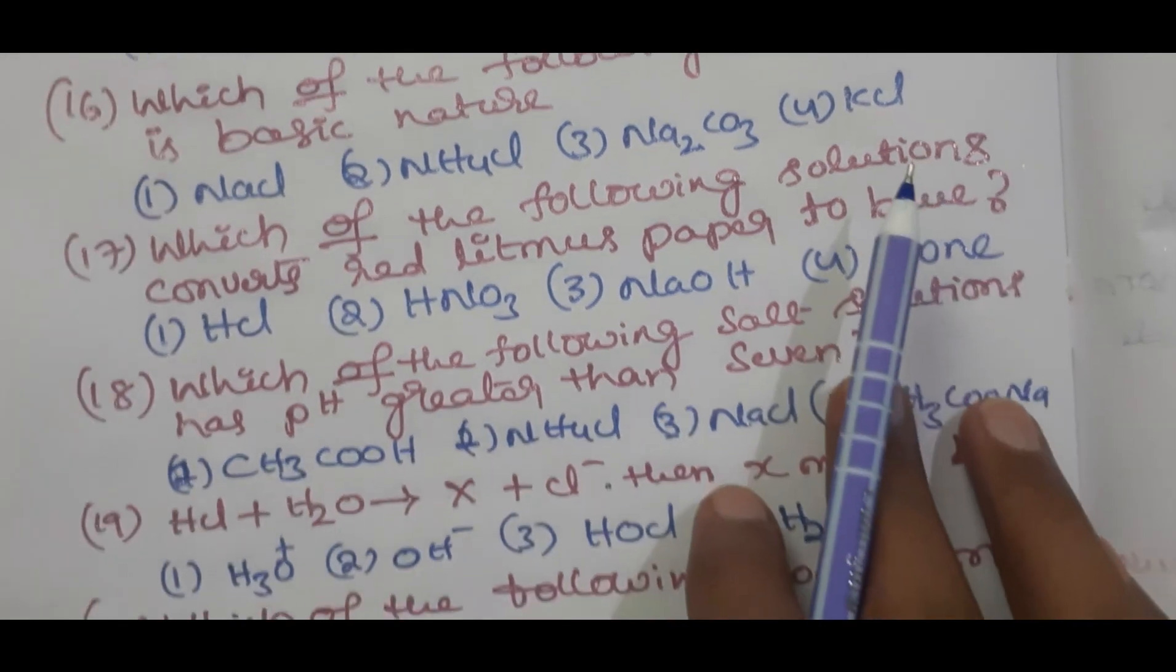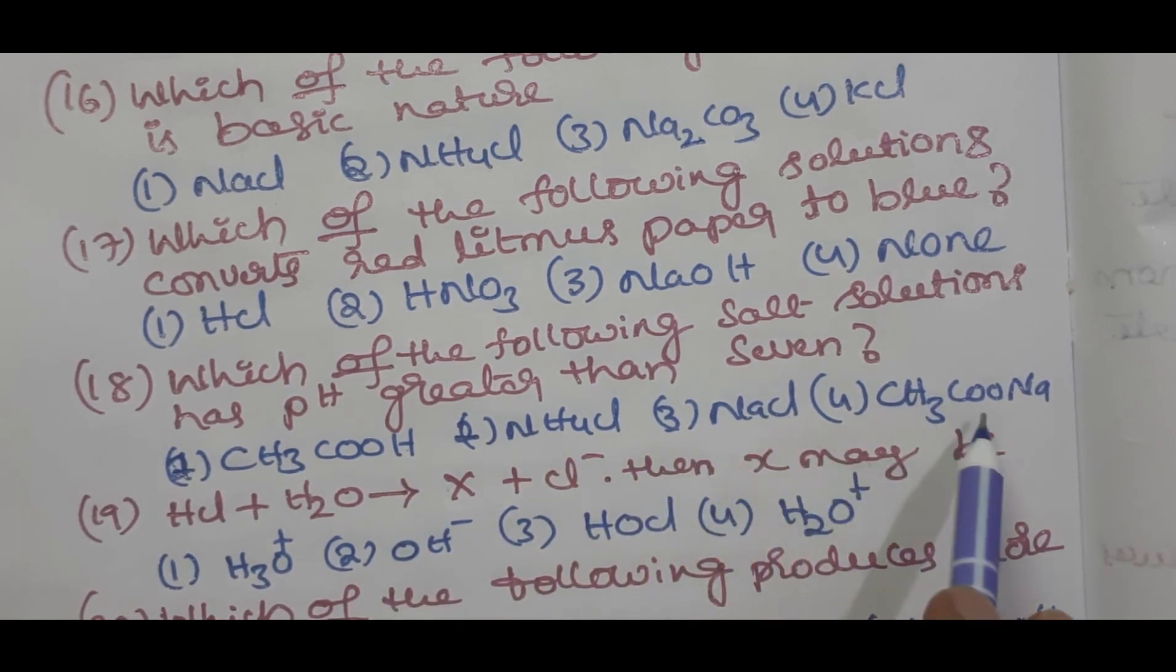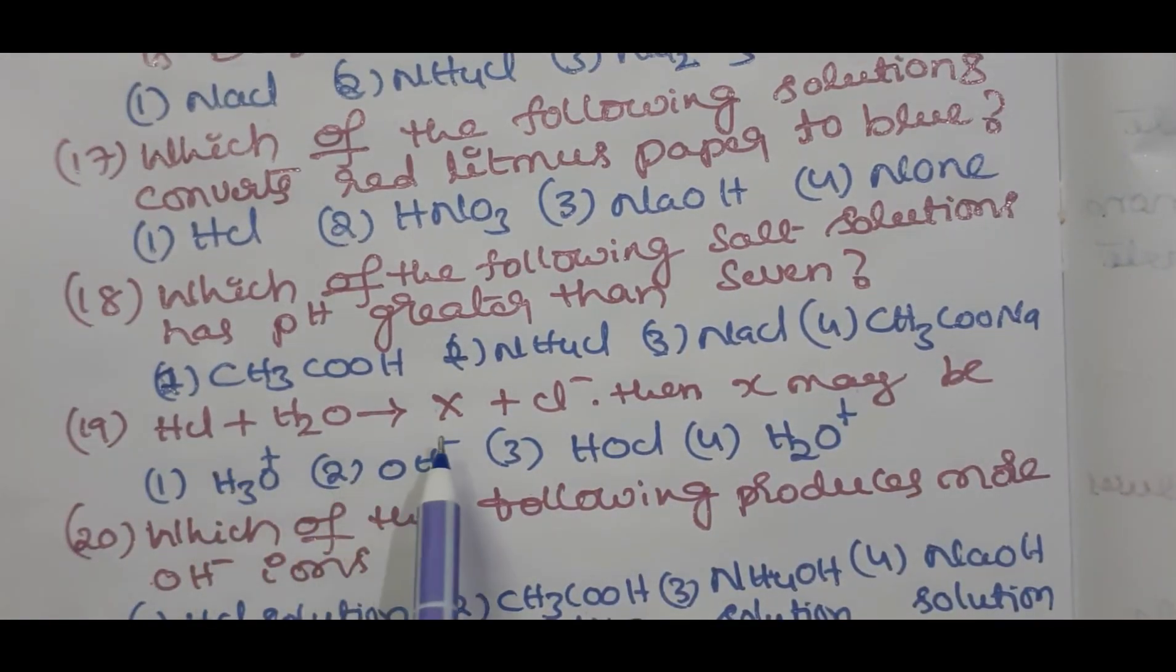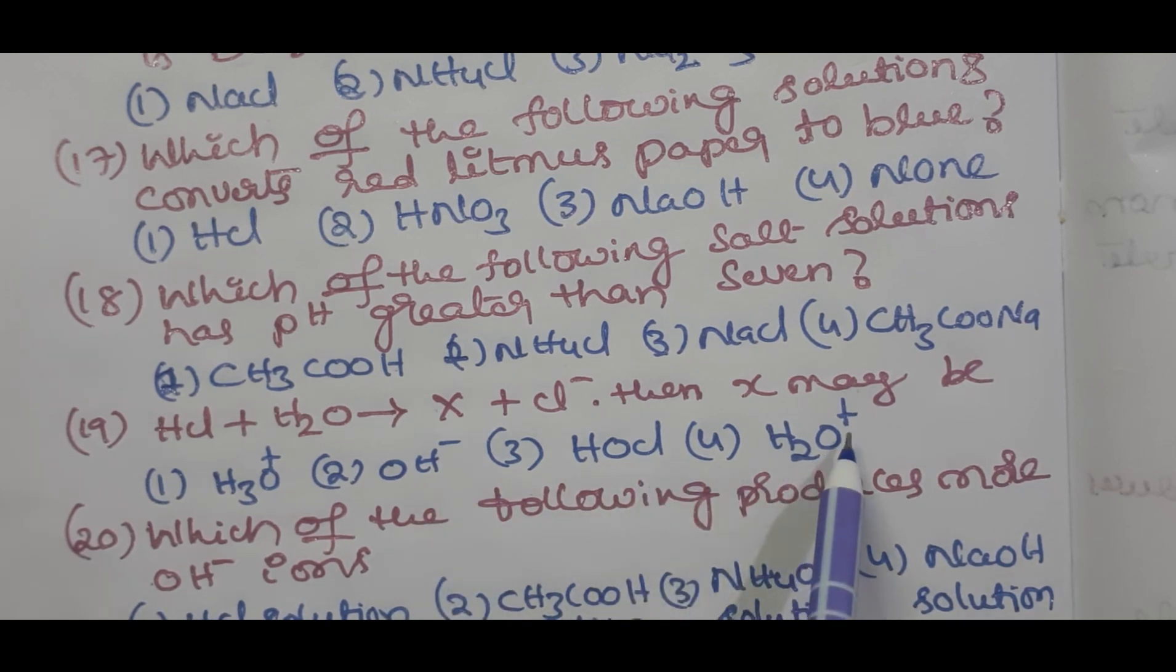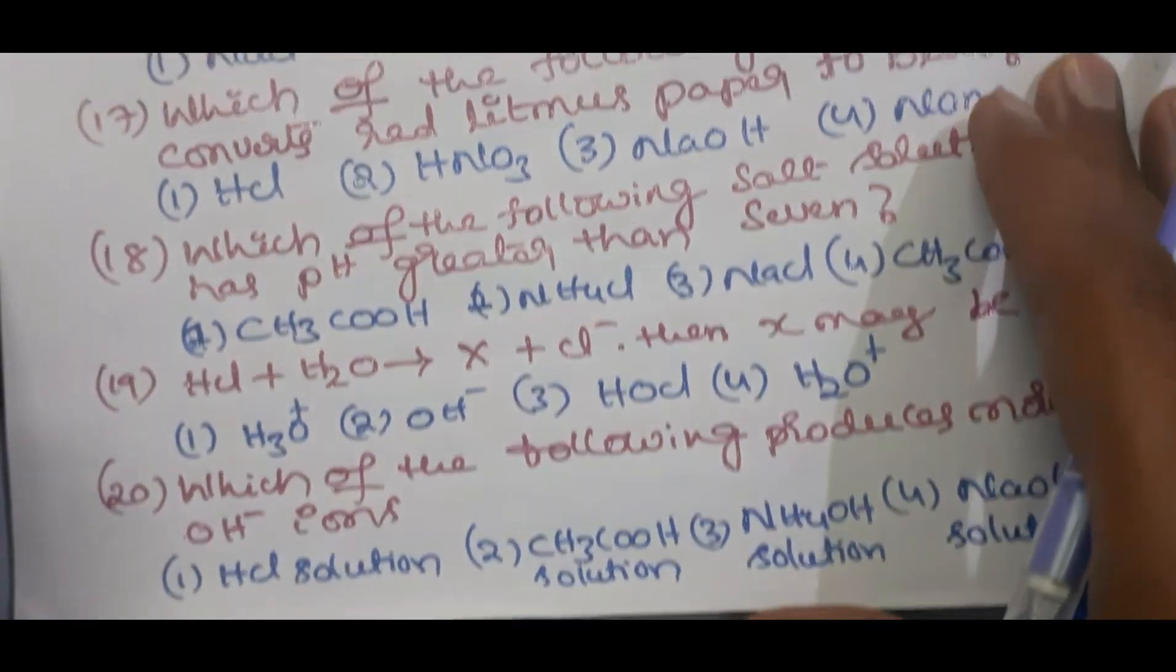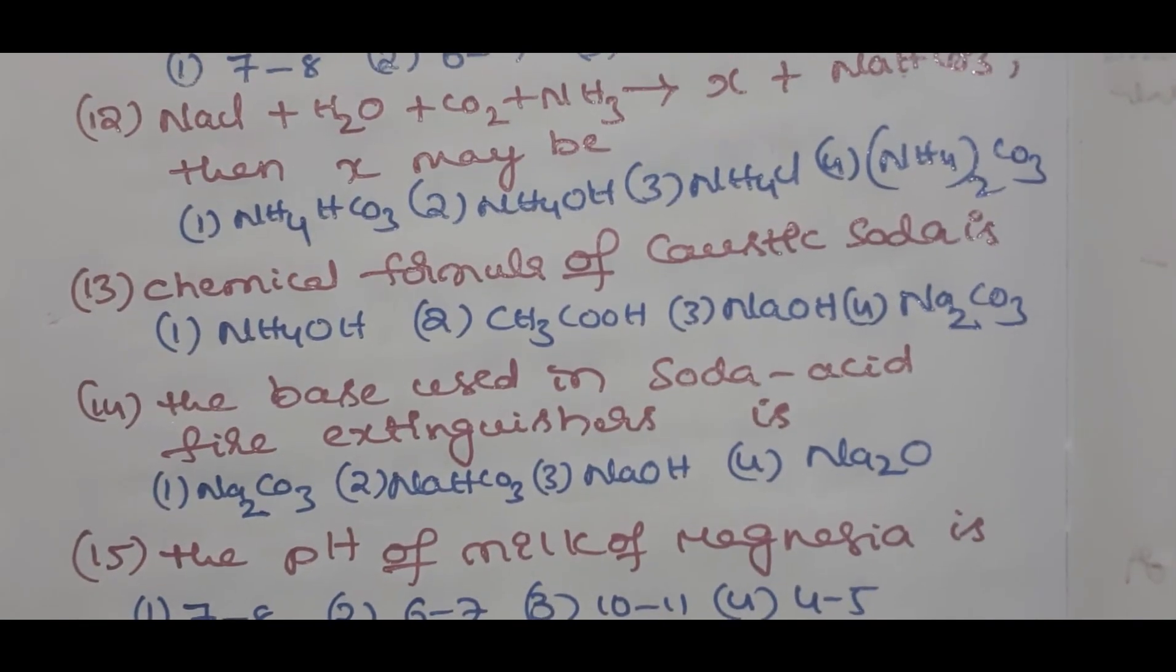Question number 18: which of the following salt solutions has pH greater than 7 - CH3COOH, NH4OCl, NaCl, CH3COONa? Question number 19: HCl + H2O gives rise to X + Cl⁻ + H2O⁻, then X what is H3O⁺, H3O⁺, H2O⁺, H2O⁺? Question number 20: which of the following produces more OH⁻ ions - HCl solution, CH3COOH solution, NH4OH solution, NaOH solution? Try the answers students and send them in comments.